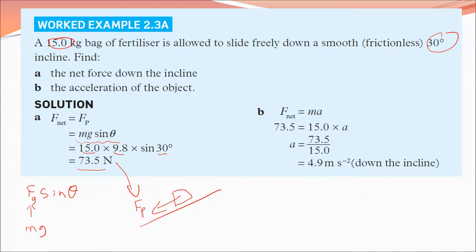For the acceleration, that's F equals ma. Acceleration here is along the ramp, not the full force of gravity — we're only looking at the component that goes down the ramp. Part A told us the force was 73.5 newtons. Rearrange F equals ma, plug your numbers in: 4.9 meters per second squared. It's an acceleration so it's meters per second squared, and we've specified it's down the incline, not in any other direction.